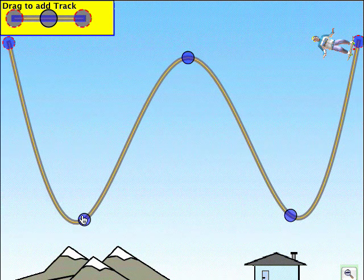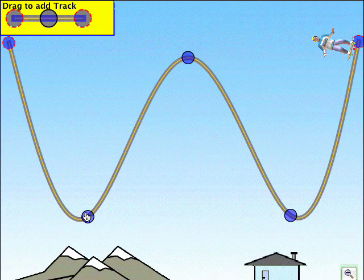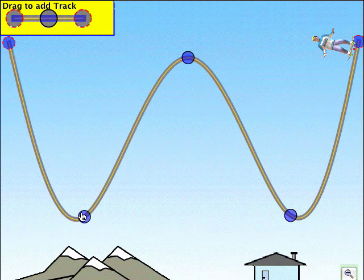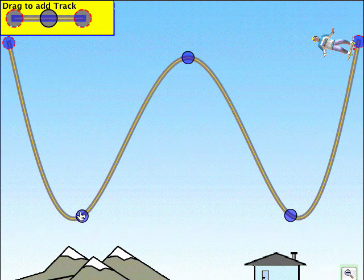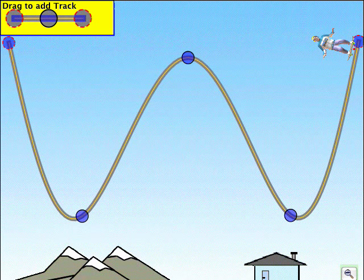So here, for example, we've made sort of a camel's hump curve and track. And let's see how our skater handles this new track.